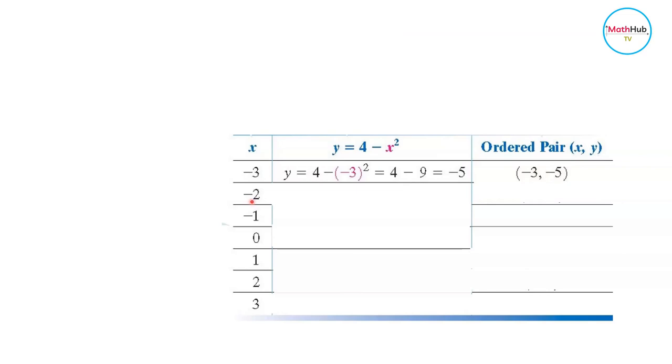Now if you choose x to be negative 2 and input it to the expression, we have y equals 4 minus negative 2 squared. This equals 4 minus 4, which is 0. So the ordered pair corresponding to this is negative 2, 0.